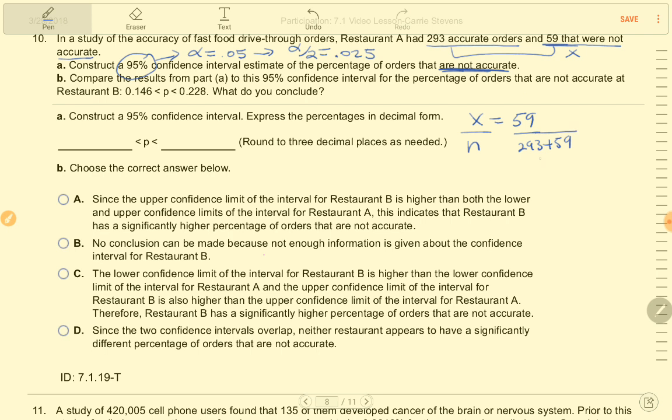When I divide those, that will be my P hat, my sample proportion. When I add those together, I get 352 total. So P hat is about 0.16761.